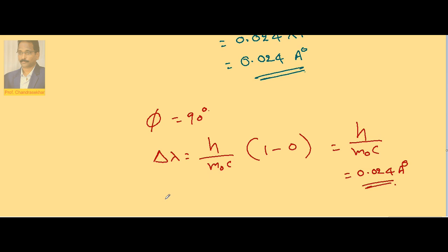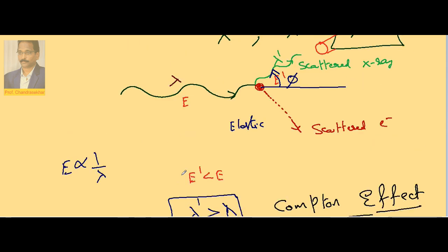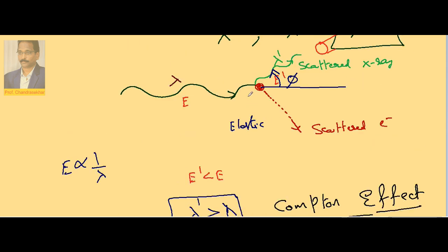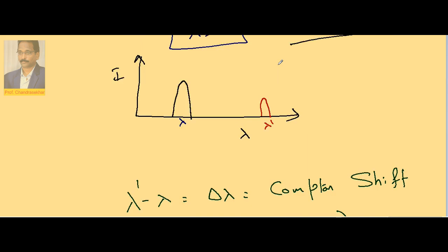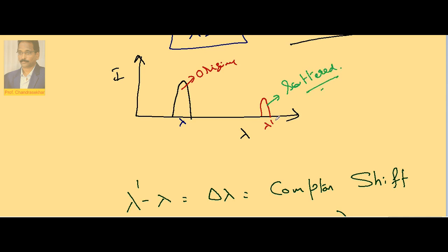In summary, the Compton effect states that when an x-ray undergoes elastic collision with a free electron inside the target, the electron is scattered in one direction and the x-ray moves in another direction. Since the x-ray loses energy, the scattered x-ray has less energy and therefore greater wavelength. The x-ray spectrum thus contains two x-rays: the original x-ray and the scattered x-ray with higher wavelength. The difference lambda dash minus lambda is the Compton shift, given by (h / m₀c) × (1 − cos φ).